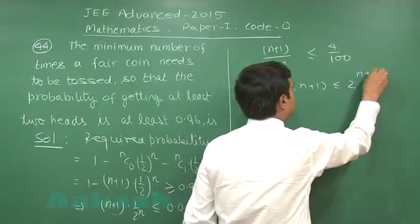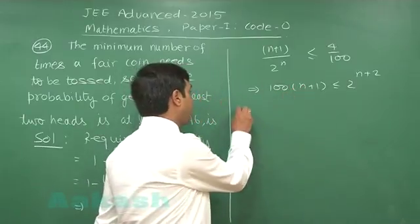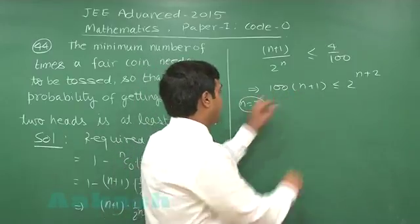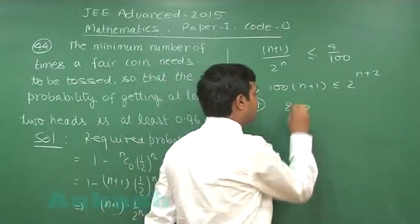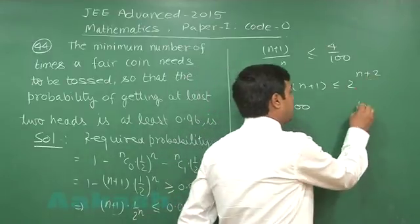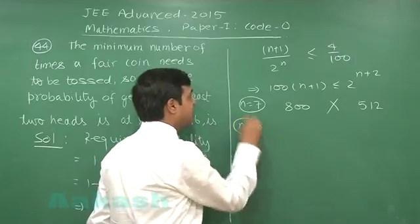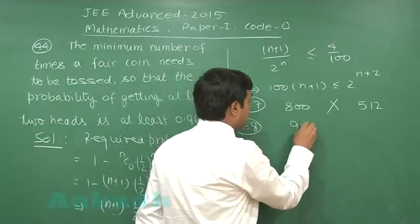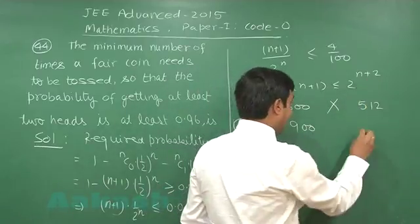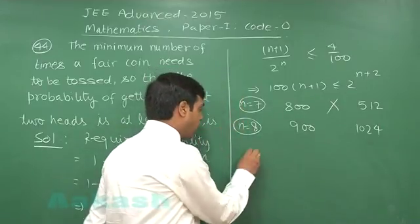Simply substituting some values for n. Let's say if I put n equals 7, I observe it becomes 800 and the other one goes 2^9, that is 512, so it is not required. If I go for n equals 8, I obtain 900 on the left-hand side and 2^10, that is 1024, on the right side. So the minimum required value is 8.